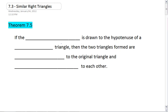This theorem is a little complicated, so we're going to take some time and unwrap it. It tells us that if the altitude is drawn to the hypotenuse of a right triangle.